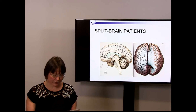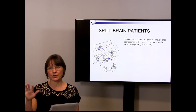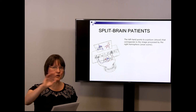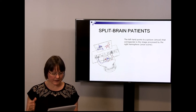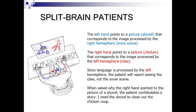When the fit would start on one side, it would not transfer to the other hemisphere. In the study, the person was shown an image with one picture on the right side and one on the left side. The left hand points to the shovel, corresponding to the image processed by the right hemisphere — that is, the image on the left. The right hand points to the picture processed by the left hemisphere — the claw. Since language is processed by the left hemisphere, the patient reports seeing the claw but not the snow scene.